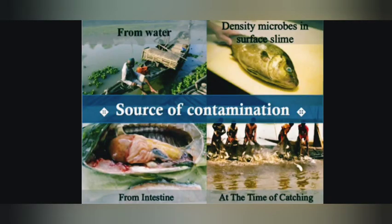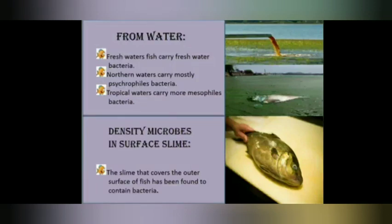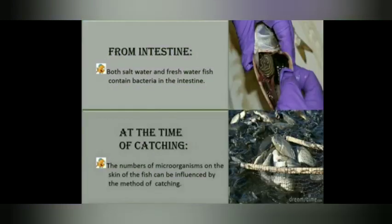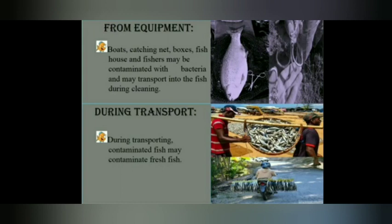Other sources of contamination include water, the skin of fishes, the intestine, and the catching of fishes from their source. Water contains freshwater bacteria and tropical mesophilic bacteria. The fish surface carries bacteria, and both surface and intestinal bacteria are present from the intestine. Additionally, equipment used for processing — boats, catching nets, boxes, fish houses, and fishers — may contain contaminants passed on to fish during cleaning and transportation.